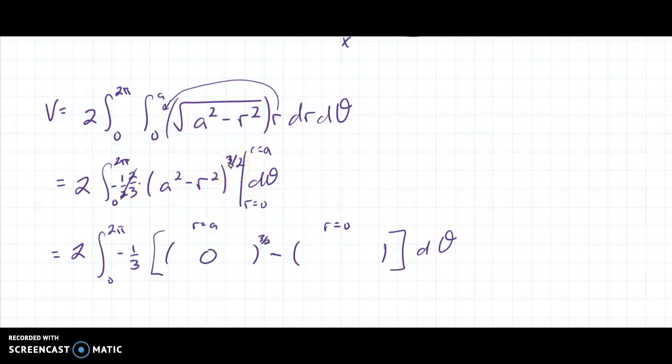That's just 0 to the 3 halves, which is going to be 0. And then when I plug in r equals 0, I subtract this 0. I plug in minus 0, so that's just nothing. So I just get A squared, and then that gets raised to the 3 halves.